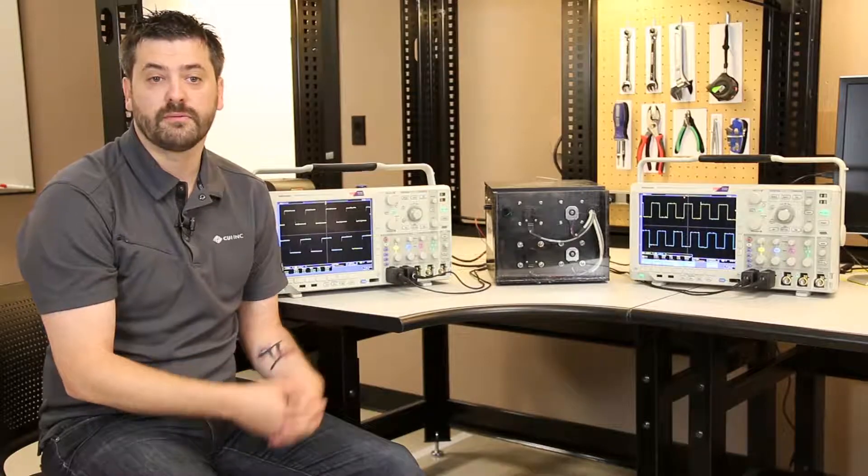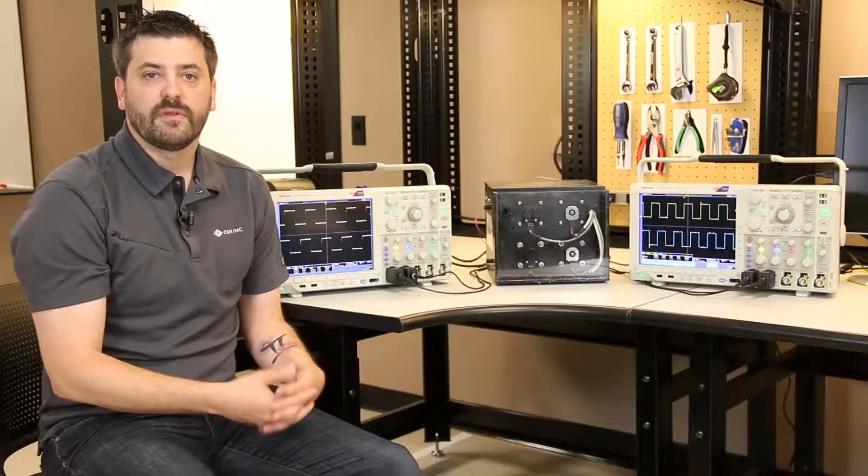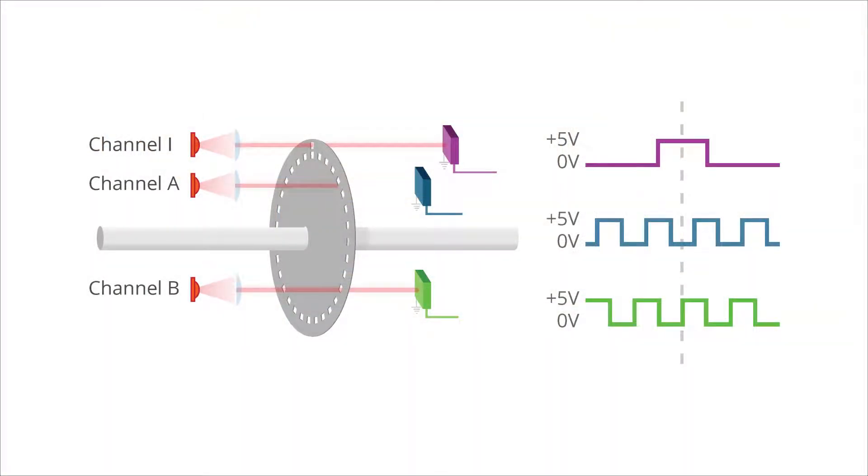Unfortunately, this is one of the areas where optical encoders fall short, particularly with the dust, dirt, and oil in the environment. Optical encoders require line of sight, and if it's a dirty or dusty environment or a lot of oil in there, that can drastically influence the performance of that optical encoder.